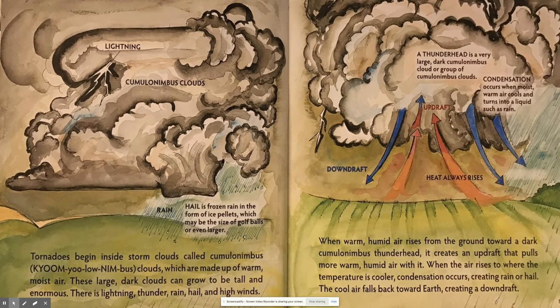Condensation occurs when moist, warm air cools and turns into a liquid such as rain. Heat always rises. When warm, humid air rises from the ground toward a dark cumulonimbus thunderhead, it creates an updraft that pulls more warm, humid air with it. When the air rises to where the temperature is cooler, condensation occurs, creating rain or hail. The cool air falls back toward earth, creating a downdraft.